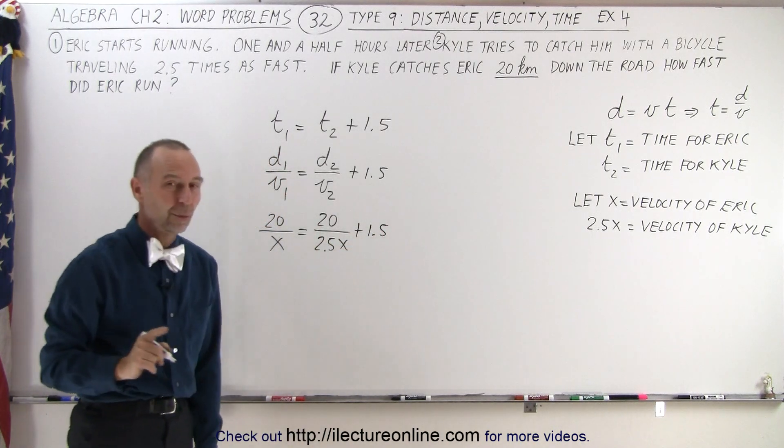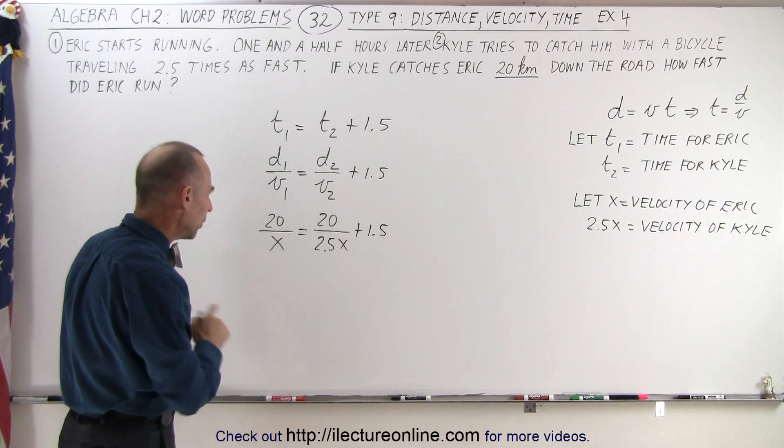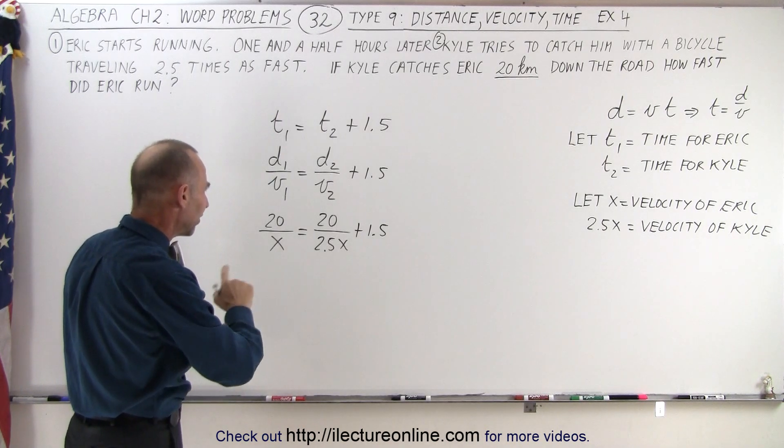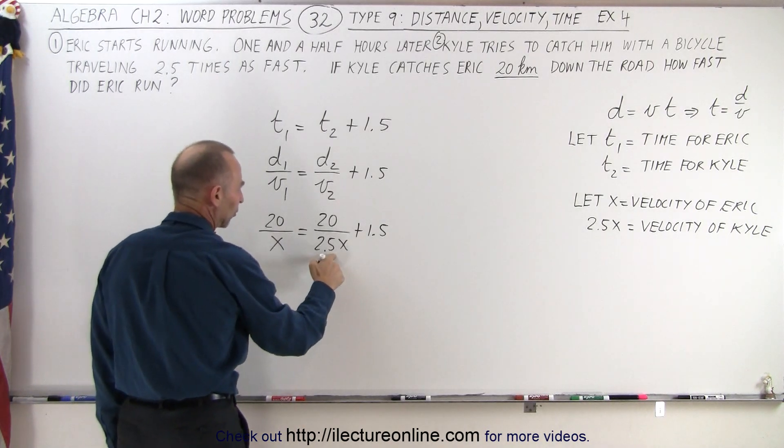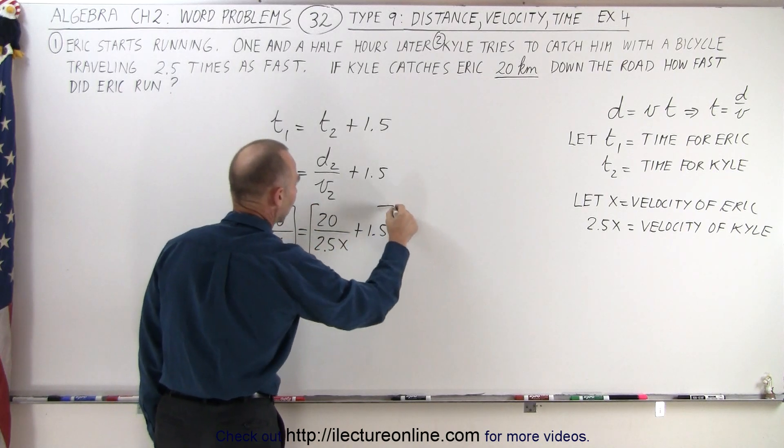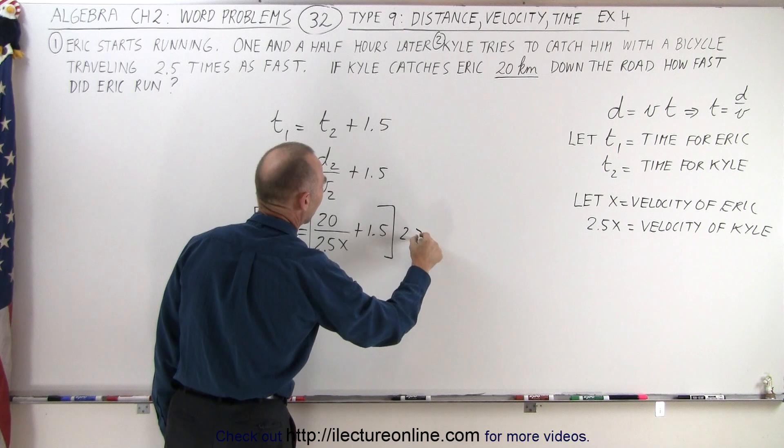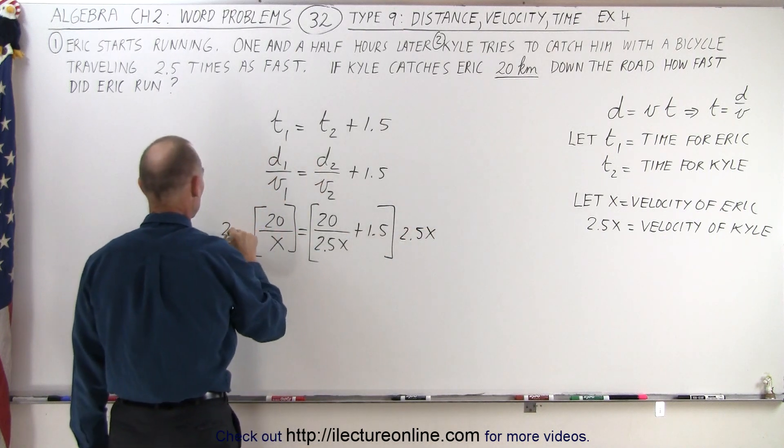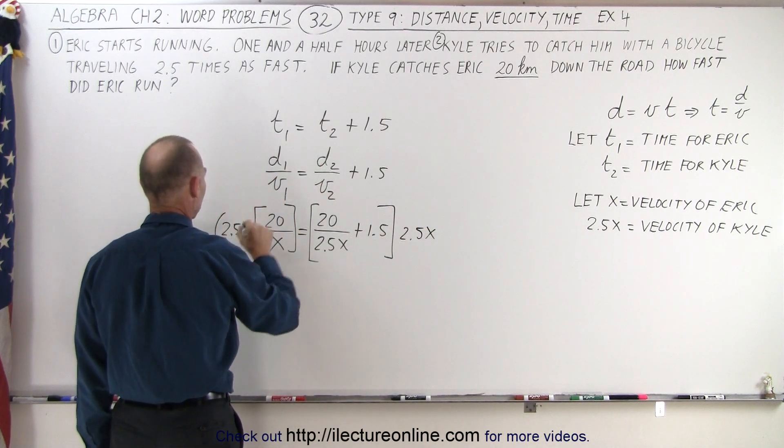And now we have an equation we can solve for x. What we need to do here is multiply both sides by the lowest common denominator, which is going to be 2.5x. The left side and the right side is going to be multiplied times 2.5x like this.